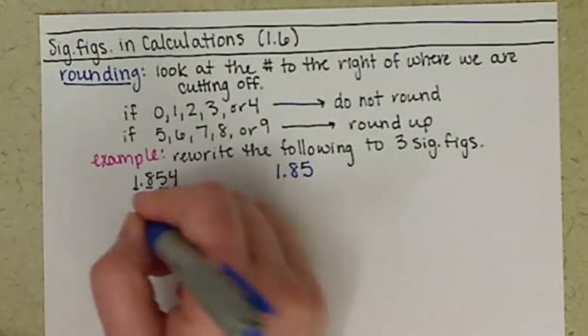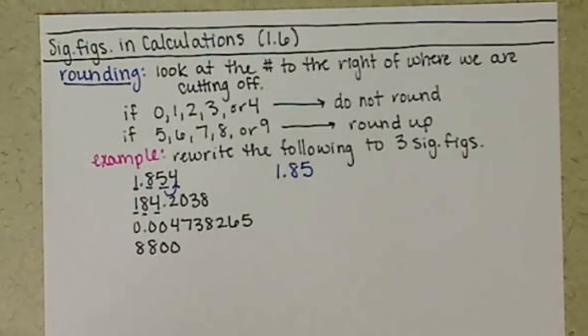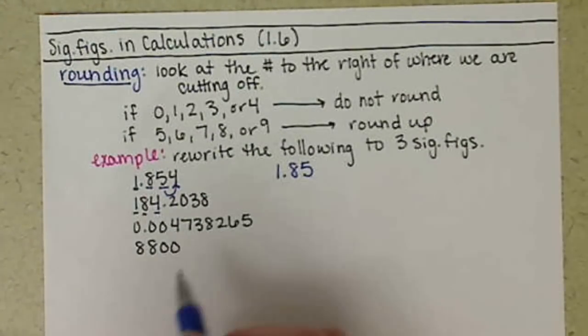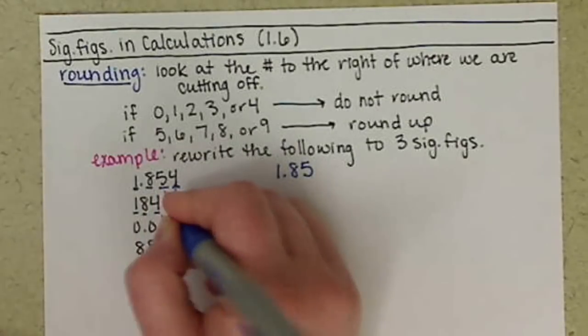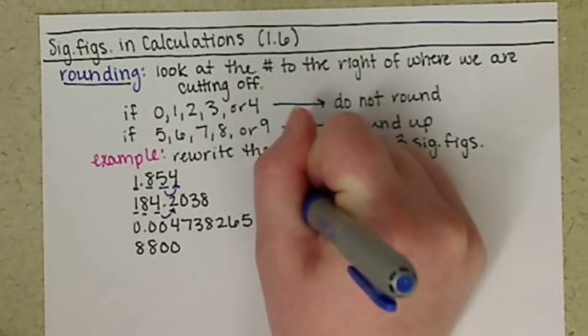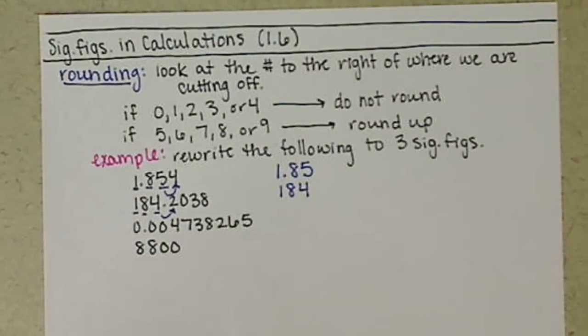For our next number, again, counting our sig figs, we have the 1, the 8, and the 4 are the 3 sig figs that we're interested in. We look to the right, that's a 2, so we don't round up, and we have 184.